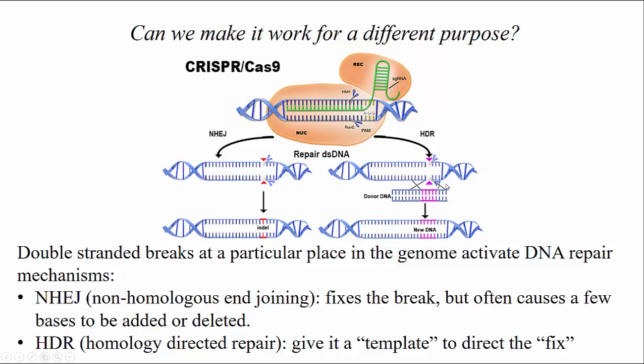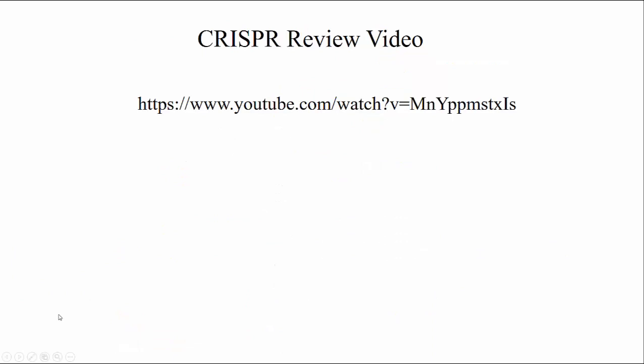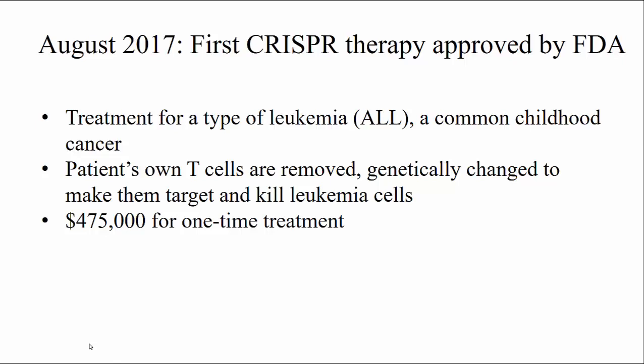So not only would you be able to make mutations in particular genes via non-homologous end joining, but you would also be able to change the genome in very particular ways — for example, if a cell had a mutation like an early stop codon in a gene, you could possibly fix that mistake back to the normal protein again. In August 2017, the very first CRISPR therapy was approved by the FDA, for a type of childhood leukemia. In this treatment, the patient's own T cells are removed and genetically changed to help them target and kill those leukemia cells.